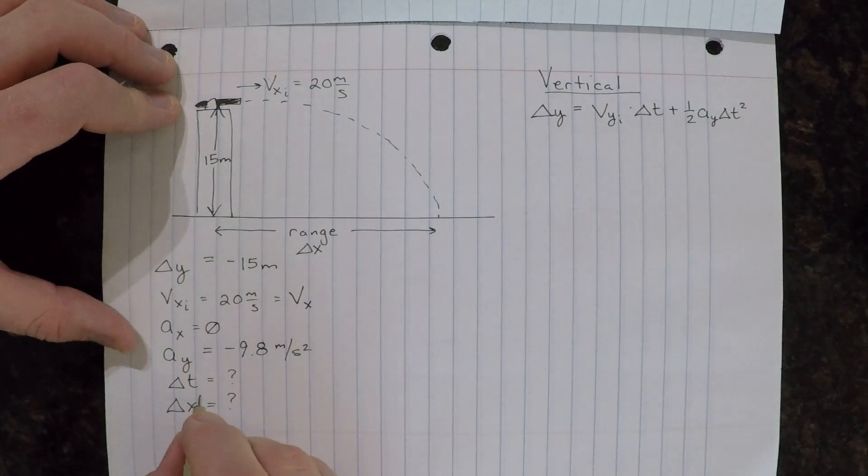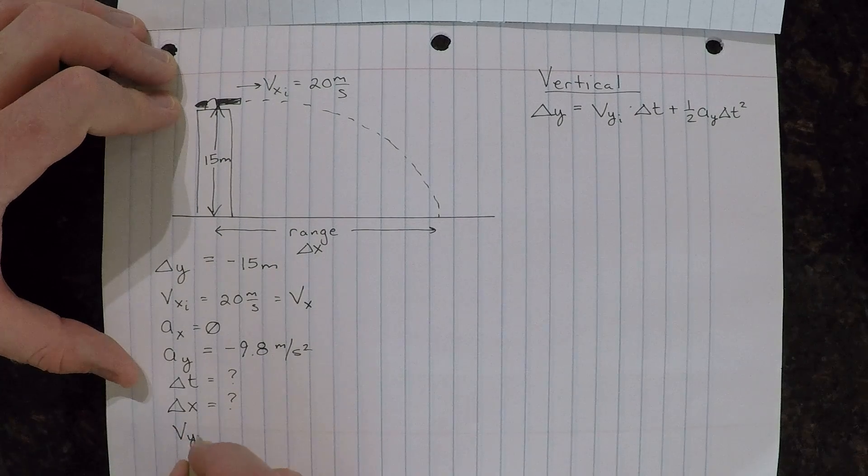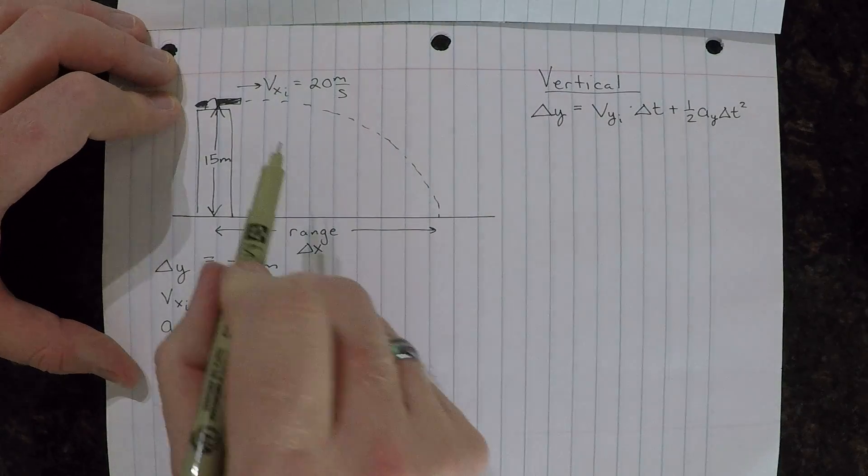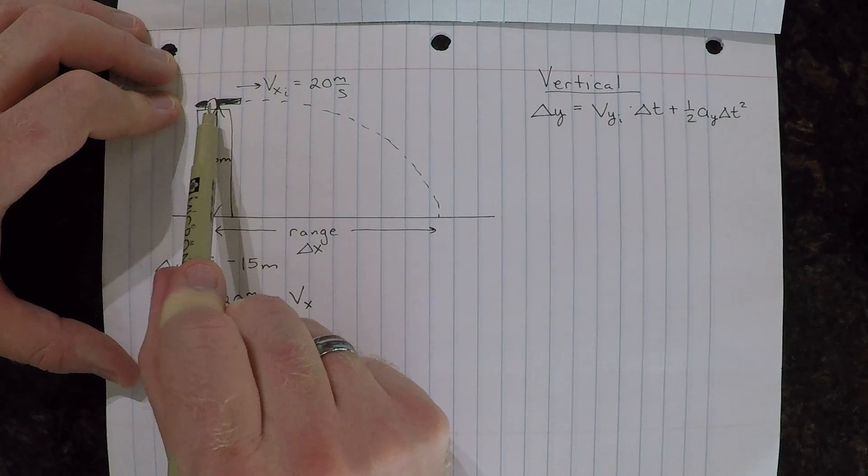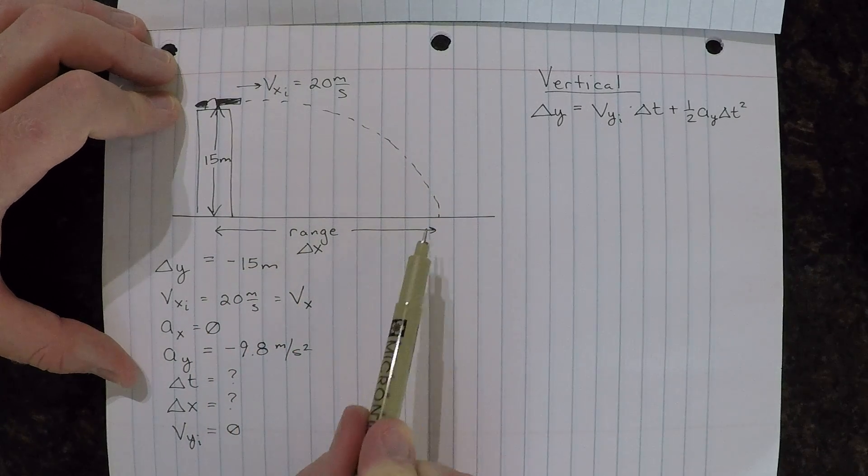Oh, one more thing. The velocity, initial velocity in the y-direction, is going to be zero, because our projectile starts firing horizontally, and it starts traveling vertically from rest.